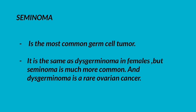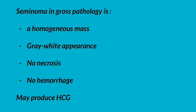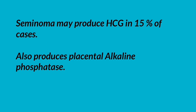Seminoma is the most common germ cell tumor. It is analogous to dysgerminoma in females, but seminoma is much more common; dysgerminoma is a rare ovarian cancer. In gross pathology, seminoma is a homogeneous mass with gray-white appearance, no necrosis, no hemorrhage. Seminoma may produce HCG in 15 percent of cases.